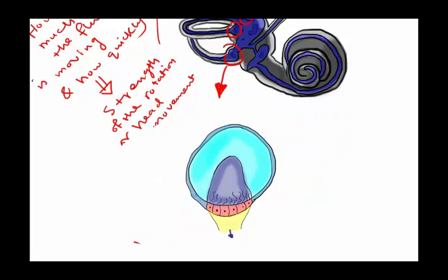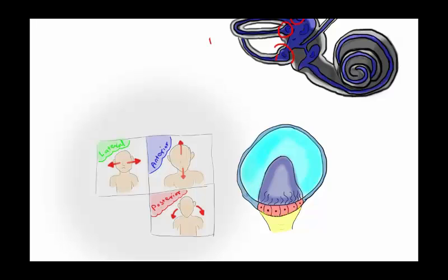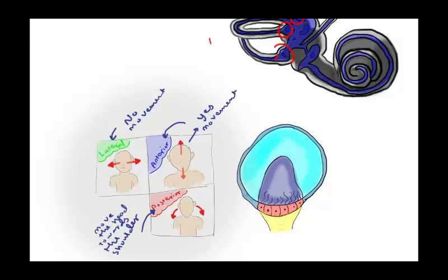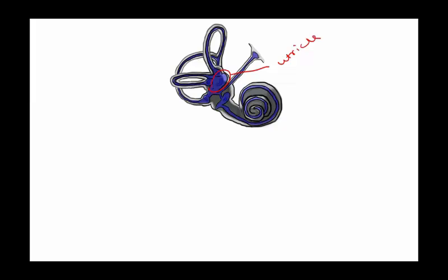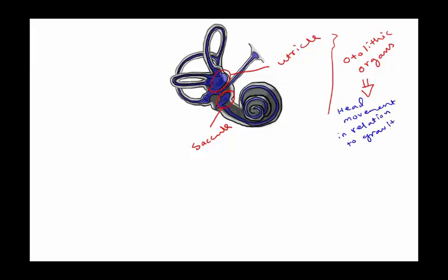A 'yes' movement of the head causes a change in the fluid of the anterior semicircular duct. A 'no' movement affects the lateral semicircular duct. Tilting the head toward the shoulder causes movement in the posterior semicircular duct. The utricle and saccule are the otolithic organs, responsible for detecting head movement in relation to gravity — the utricle for vertical acceleration and the saccule for linear acceleration.